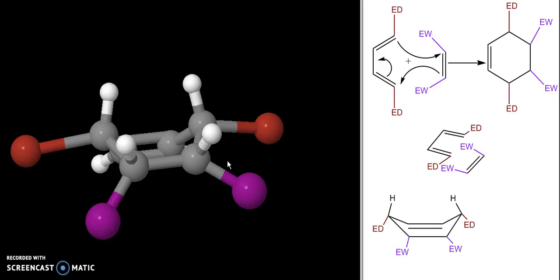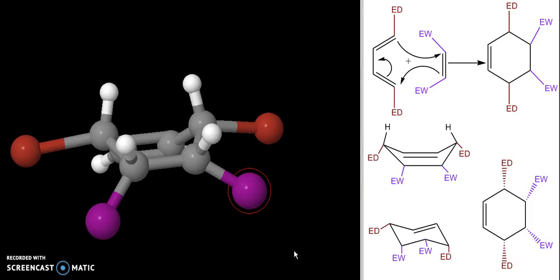Which means when I draw a more normal representation of this, whether it be in a chair form or a regular planar representation, in this particular reaction all of my substituents are cis to one another. As I said, I can draw it in this chair form or in this more planar form showing the groups being cis.